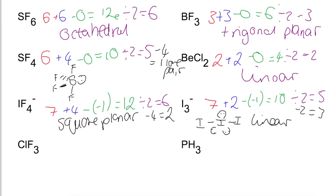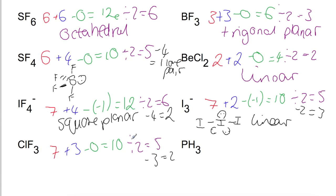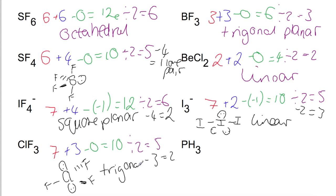For ClF3, chlorine is the central atom with seven electrons. We add three for the fluorines and there's no charge, giving ten electrons. Dividing by two gives five electron pairs. Taking away the three attached atoms gives two lone pairs. With five electron pairs based on a trigonal bipyramid and two lone pairs getting as far away from each other as possible — 180 degrees apart above and below — the shape of the molecule itself is trigonal planar.